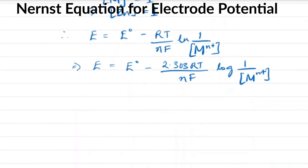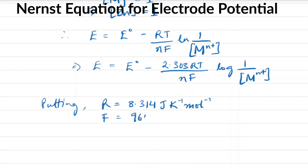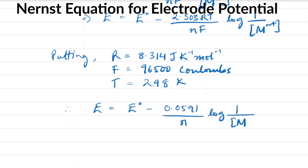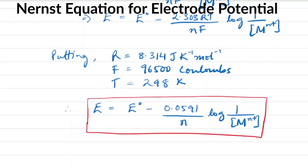If we substitute the values R = 8.314 J/K/mol, F = 96,500 coulombs, and T = 298 Kelvin, the Nernst equation can be written as: E = E° − (0.0591/n) log(1/[M^(n+)]).